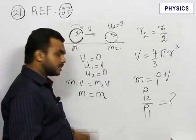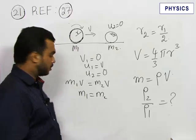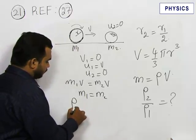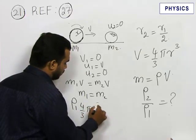Mass is density times volume. This is a sphere, so the volume is 4/3 π r³. That is density of first sphere times 4/3 π r³.